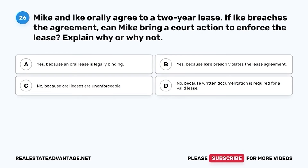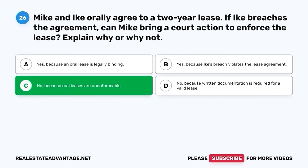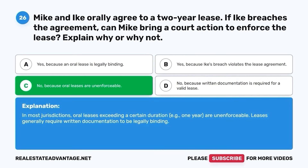Question 26. Mike and Ike orally agree to a two-year lease. If Ike breaches the agreement, can Mike bring a court action to enforce the lease? A. Yes, because an oral lease is legally binding. B. Yes, because Ike's breach violates the lease agreement. C. No, because oral leases are unenforceable. D. No, because written documentation is required for a valid lease. The correct answer is C. No, because oral leases are unenforceable. In most jurisdictions, oral leases exceeding a certain duration, for example one year, are unenforceable. Leases generally require written documentation to be legally binding.